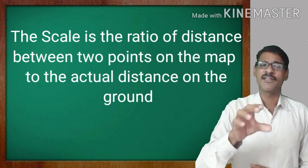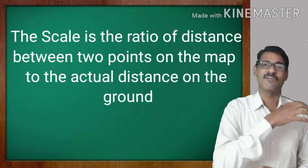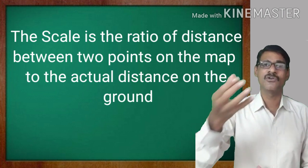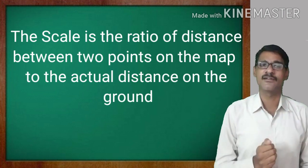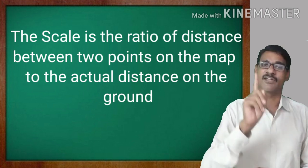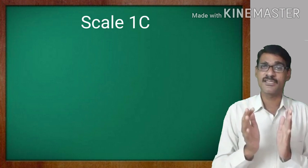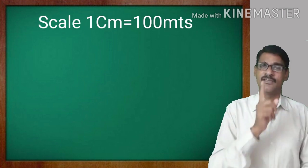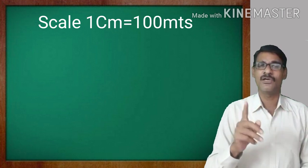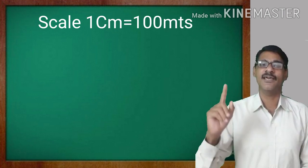For example, when drawing the map of the bridge, they showed 100 meters as 1 centimeter. They reduced 100 meters to 1 centimeter. So what is scale? It is: 1 centimeter on the map is equal to 100 meters on the actual place.